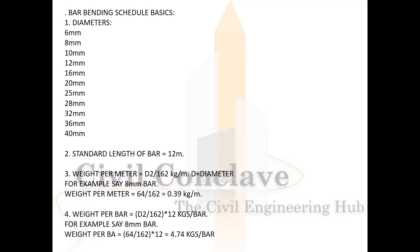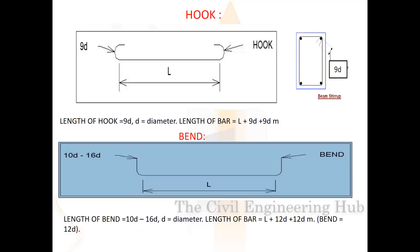Weight per bar for a 12-meter bar = (d² / 162) × 12. For an 8mm bar: 64 divided by 162, multiplied by 12 = 4.74 kg per bar.